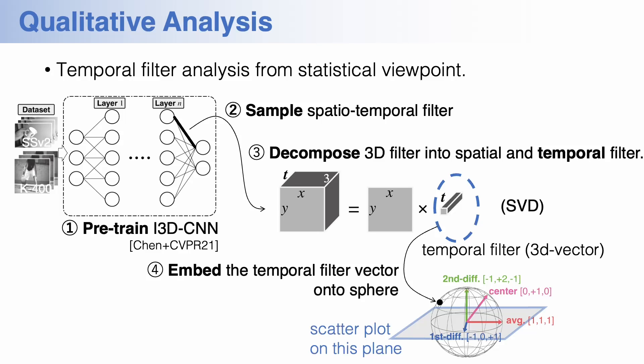Finally, the 3D temporal filter vector is embedded on a unit sphere. Please note that on the sphere, there are physically distinctive filters. For example, there is a simple center filter that activates only the center frame, and we can also find average filters as well as derivative filters of up to second order. For better visualization, we show the distribution of temporal filters projected on this plane.